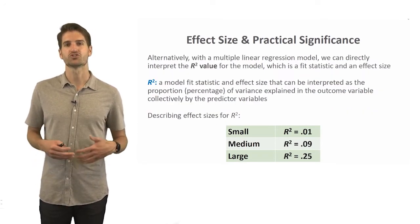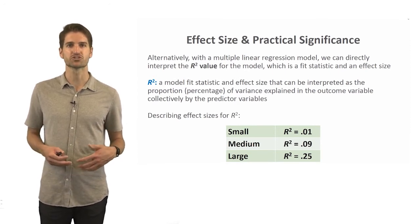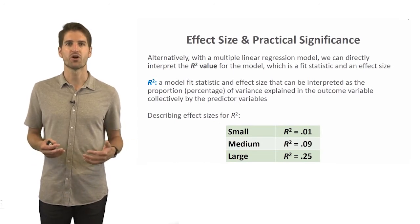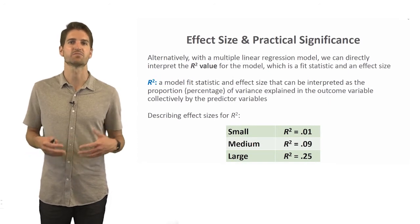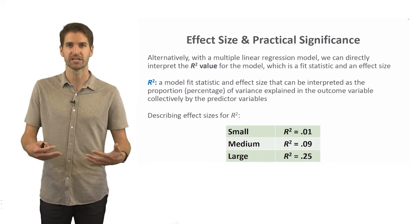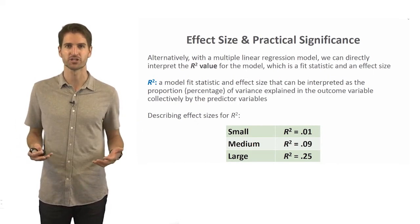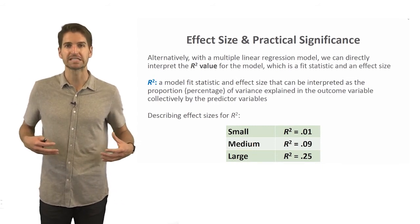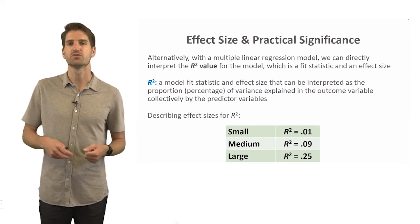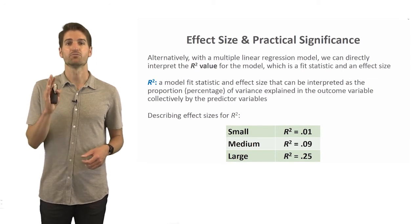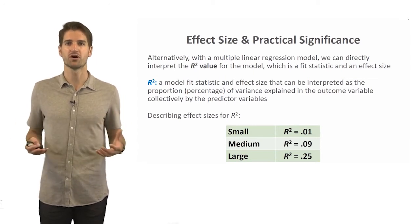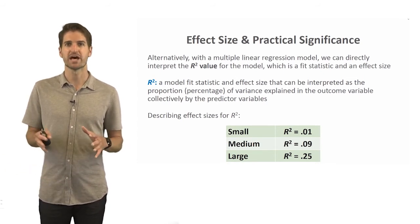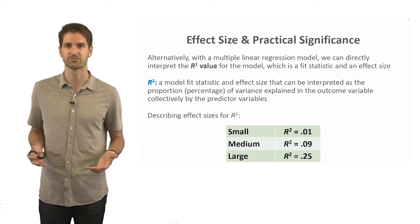Another way to interpret practical significance in a multiple linear regression model is to directly interpret the R-squared value. R-squared is both a model fit statistic and an effect size, interpreted as the proportion or percentage of variance explained in the outcome variable collectively by all the predictor variables. In multiple linear regression with two or more predictors, we're talking about the collective variance explained by all predictors in relation to the outcome. Effect size benchmarks for R-squared: small is about 0.01, medium is about 0.09, and large is about 0.25.